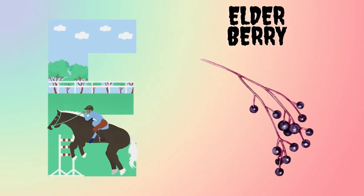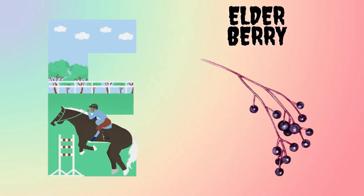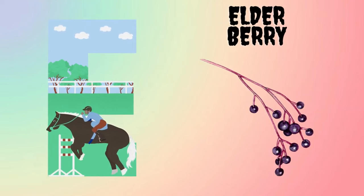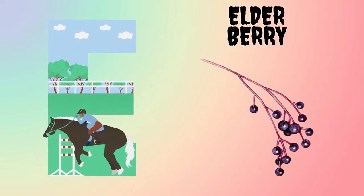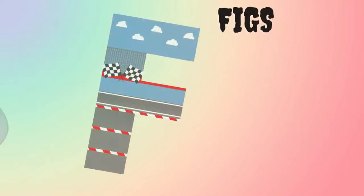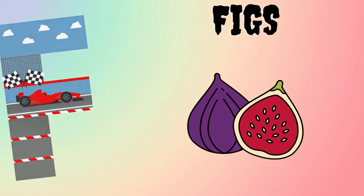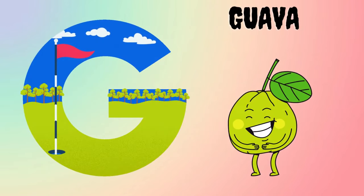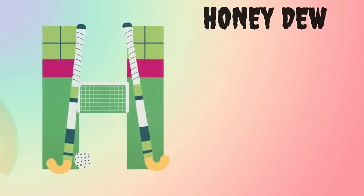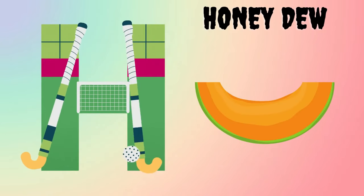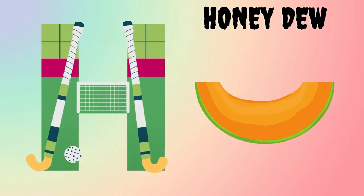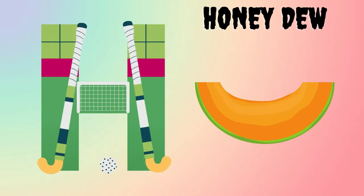E is for Elderberry. F is for Figs. G is for Guava. H is for Honeydew.